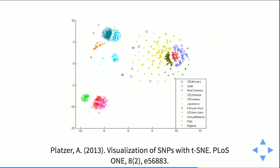t-SNE is used quite a lot in my actual work as well. For example, this visualization shows the genetic diversity among humans — different communities living in different parts of the Earth are separated. You can see which are closer together and which are more different. Chinese people living in the US cluster near those living in China, and near Japanese people, showing genetic closeness. You can visualize very high-dimensional data sets this way.